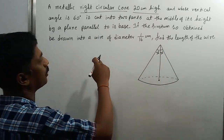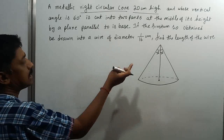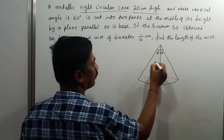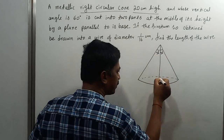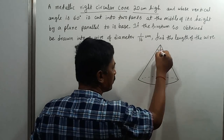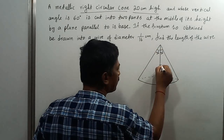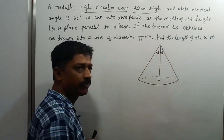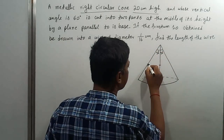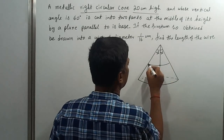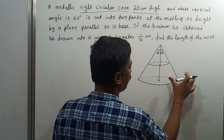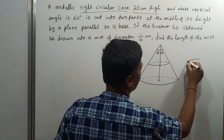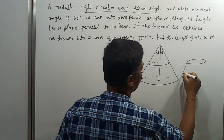So that means this is 30 degrees and that is 30 degrees. It is cut into two parts at the middle of its height. They said that this is 20 centimeters, and the middle means each part is of 10 centimeters. Here it is cut, and this forms a frustum of such kind.